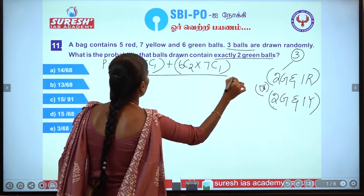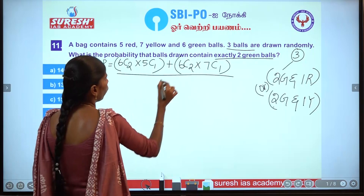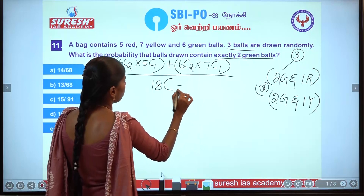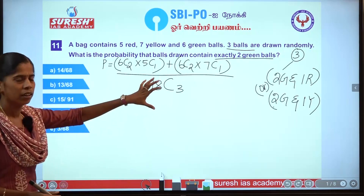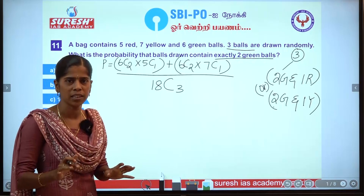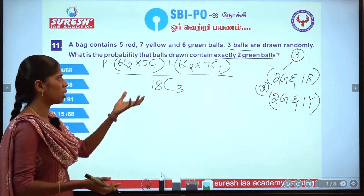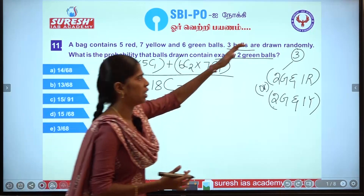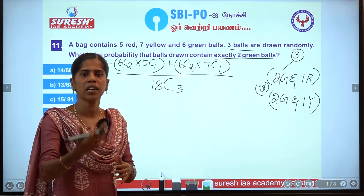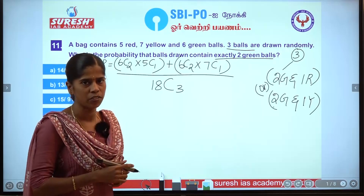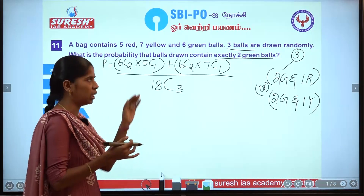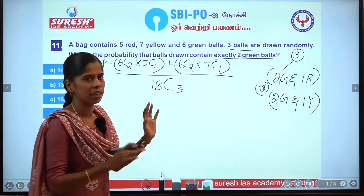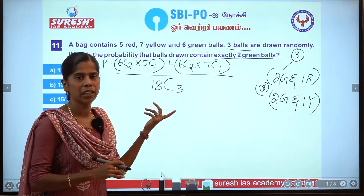The total count is 18. In 18 we can count 3 balls. In objective type exams we will have heavy calculations, so we should approach this method directly. If we use this method, we can save steps by cancelling and adding.